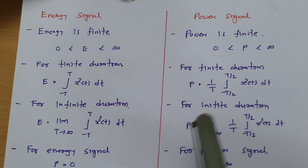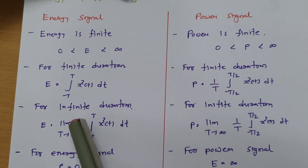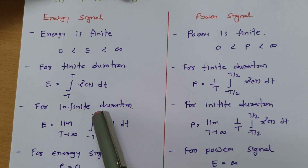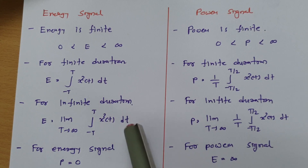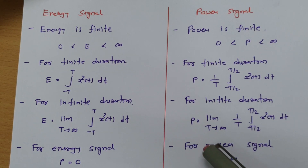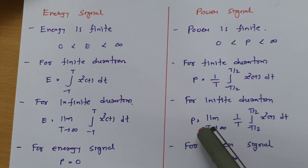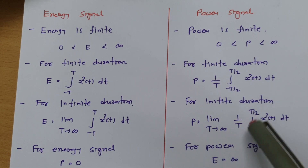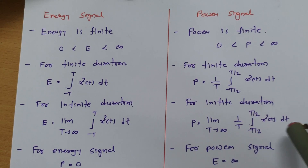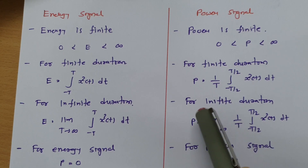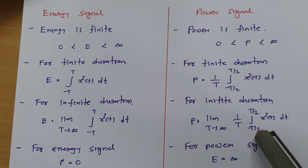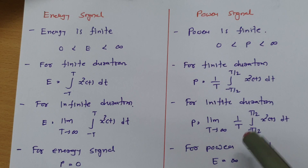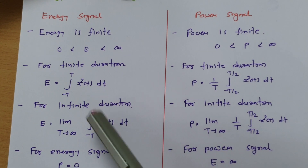Here I have considered the power calculation as (1/T) times the integral from minus T/2 to T/2 of x squared dt. For infinite duration, energy calculation is: limit as T tends to infinity of the integral from minus T to T of x squared dt. For infinite duration, power is: limit as T tends to infinity of (1/T) times the integral from minus T/2 to T/2 of x squared dt. Some books give this as (1/2T) with limits from minus T to T.